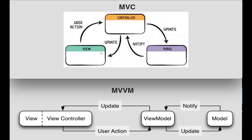How MVC works: if the user is doing any action on the view — which is our storyboard and XIB files — that action is passed to the controller. The controller asks for data from the model if that action is related to some data. The model notifies the controller along with that data, and then the controller updates the view.